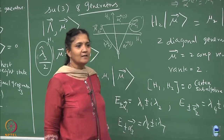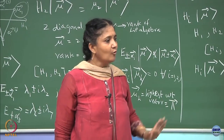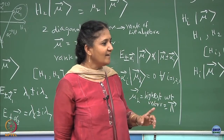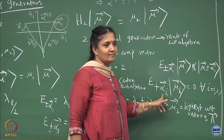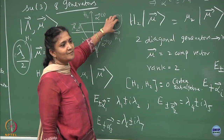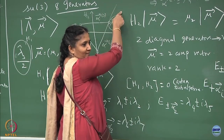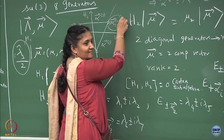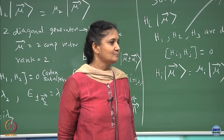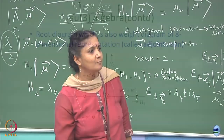You can show that this one is the highest weight vector for the defining representation. Diagrammatically it is visible, but in general you can mathematically write a mu 1 vector and see whether all the raising operators are annihilating it — not just one, it should be annihilated by all three raising operators alpha 1, alpha 2, alpha 3. Then only you call it to be a highest weight. It turns out that mu 1 is the highest weight vector and we can denote lambda by that mu 1 vector.